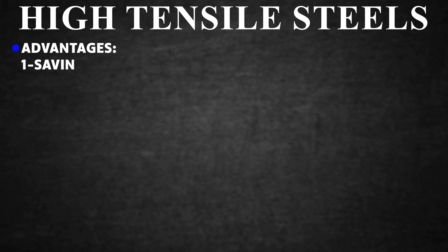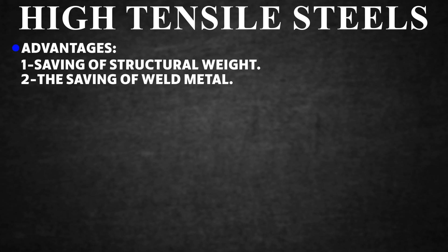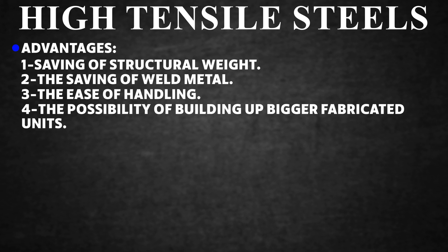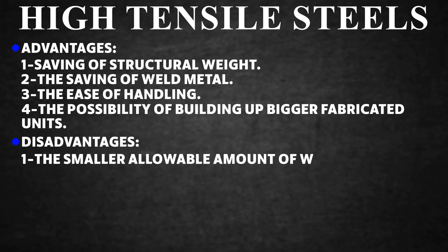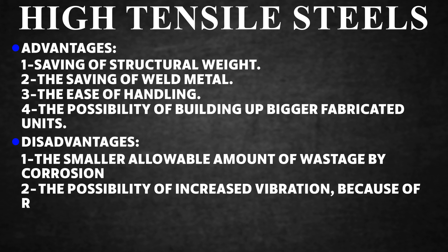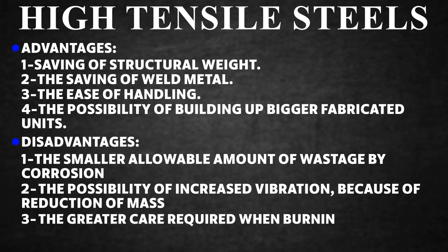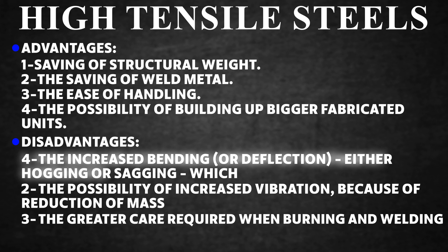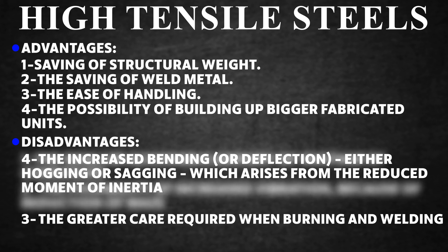Advantages of high-tensile steels: (1) saving of structural weight; (2) saving of weld metal; (3) ease of handling; (4) possibility of building bigger fabricated units. Disadvantages: (1) smaller allowable wastage by corrosion; (2) possibility of increased vibration due to reduction of mass; (3) greater care required when burning and welding; (4) increased bending or deflection — either hogging or sagging — arising from the reduced moment of inertia.